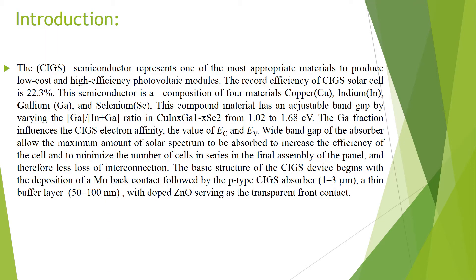The CIGS semiconductor presents one of the most appropriate materials to produce low-cost and high-efficiency photovoltaic modules. The record efficiency of CIGS solar cells is 22.3%. This semiconductor is a composition of four materials: copper, indium, gallium, and selenium.